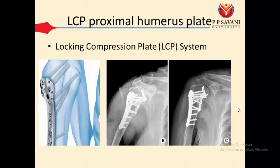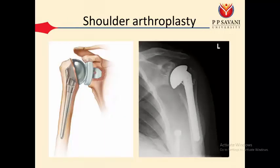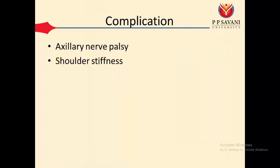The second option is open reduction and internal fixation, using a specialized locking compression plate system with screws to stabilize the fracture fragments, as you can see in the image. In the worst cases, when the fracture fragments are in multiple pieces, they will go for shoulder replacement — shoulder arthroplasty — where the original shoulder is replaced by an artificial shoulder, as seen in this X-ray.